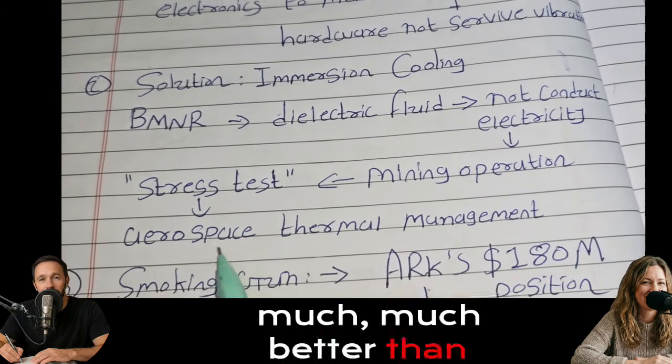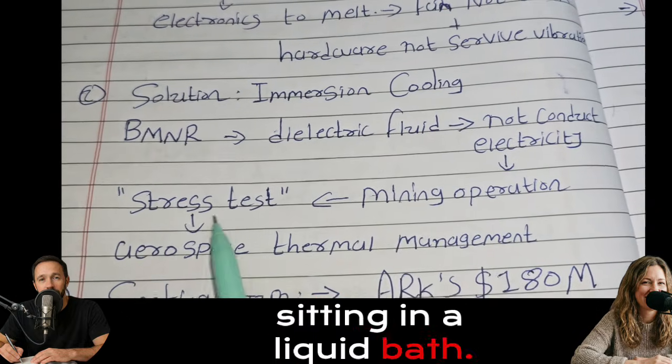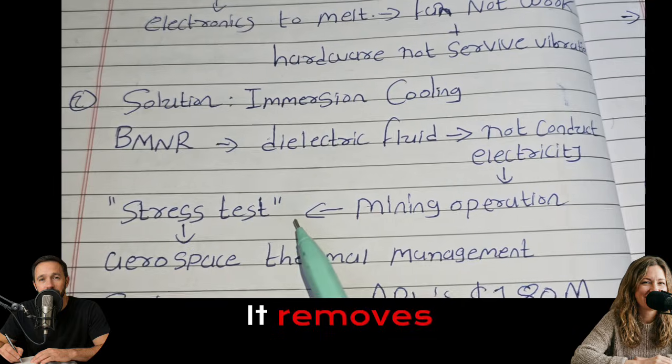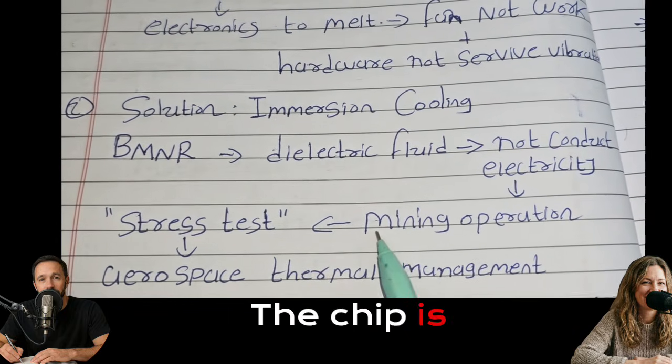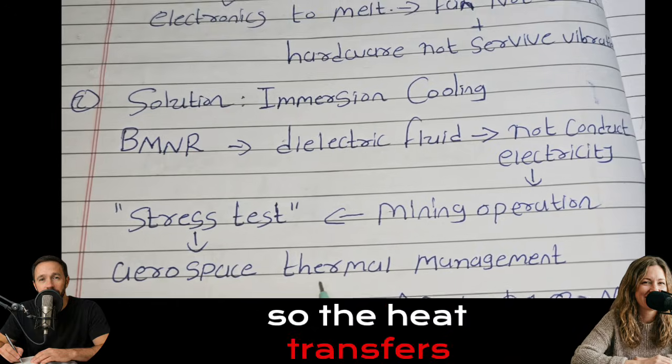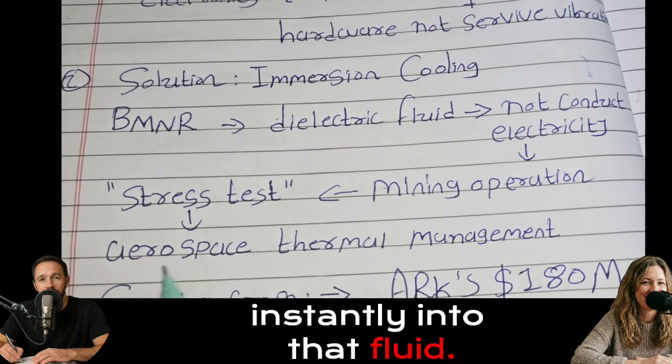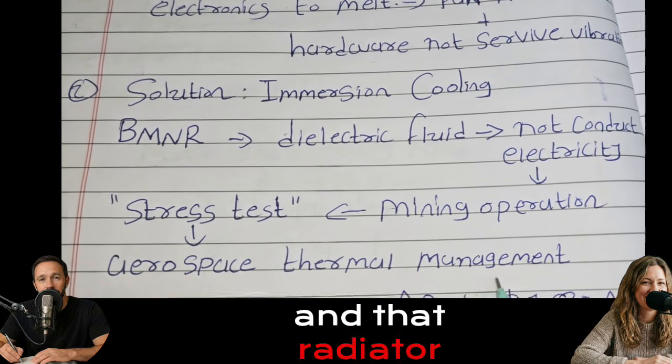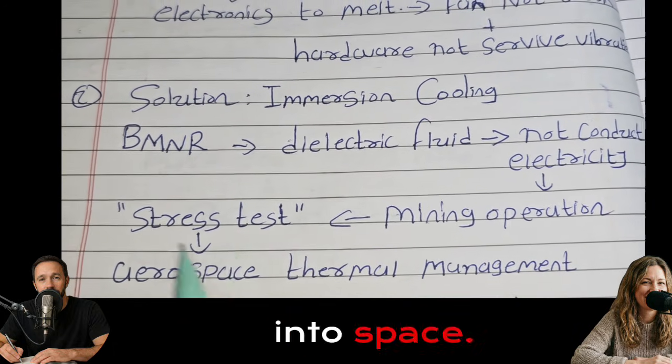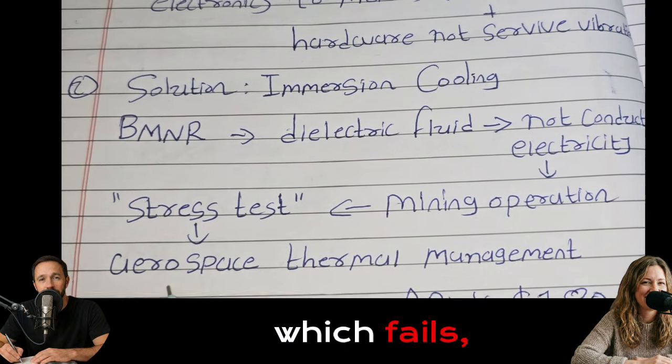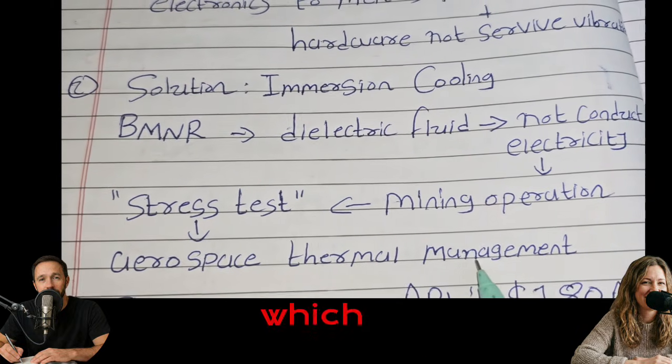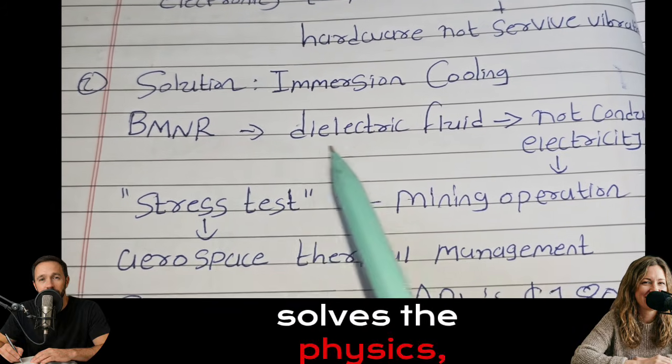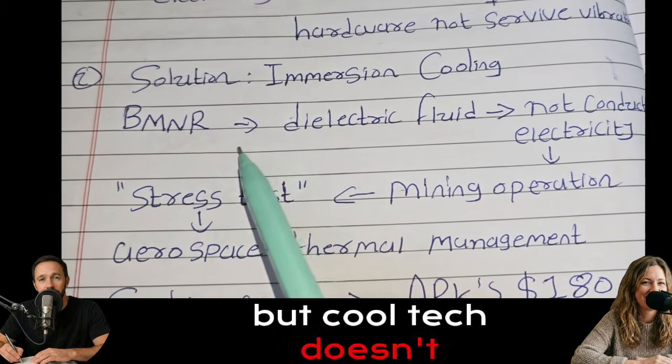So the computer is sitting in a liquid bath. How does that solve the vacuum problem in space? It removes the need for air entirely. The chip is in direct contact with the liquid, so the heat transfers instantly into that fluid. No fans needed. You just pump that warm fluid to a radiator on the outside of the spacecraft, and that radiator sheds the heat away into space. So you're swapping a convection system, which fails, with the conduction and radiation system, which works perfectly in space. The engineering case is strong. BMNR has the tech that solves the physics. But cool tech doesn't always mean a good stock.